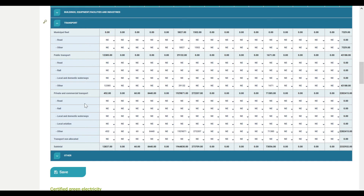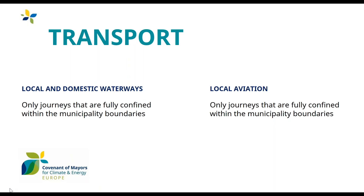Each sector includes a list of possible relevant transport modes, such as road, rail, local and domestic waterways, and local aviation. As a rule, for local and domestic waterways and local aviation, you should only report emissions from journeys occurring inside the municipality boundaries — meaning only journeys that are both starting and ending inside the municipality. For waterways, this could be the case of touristic cruises; while for aviation, it could be the case of emergency helicopters.